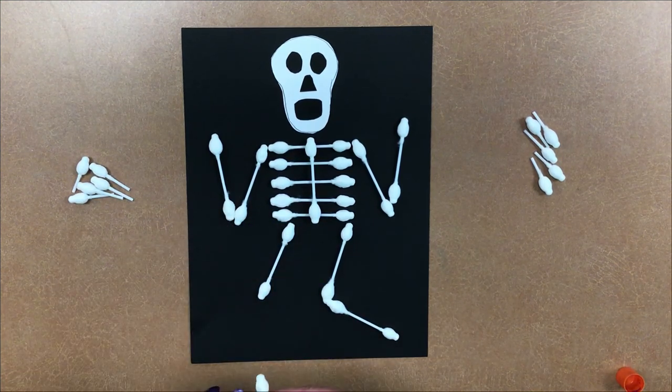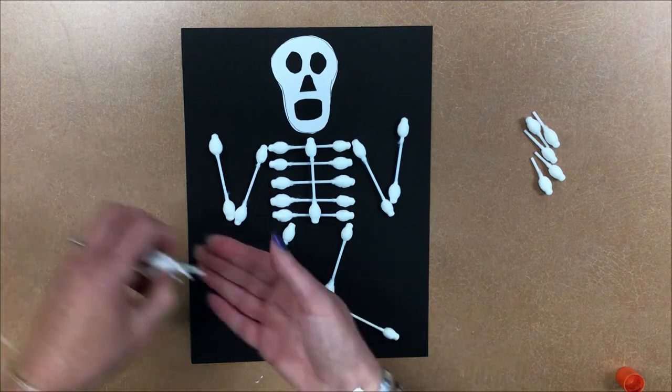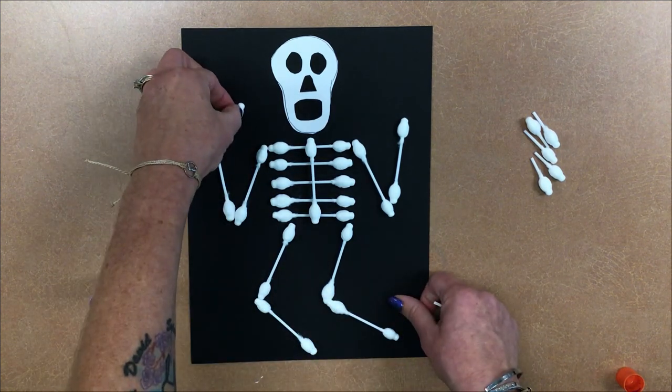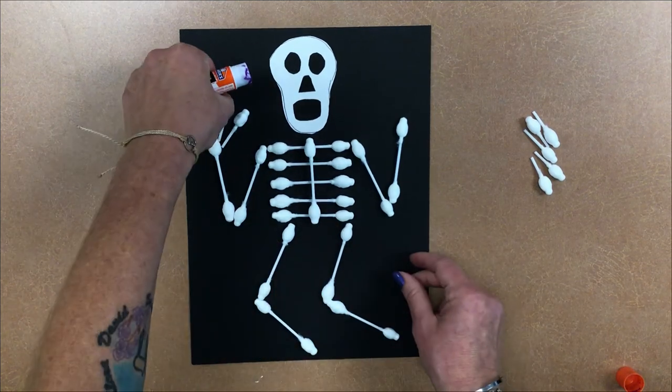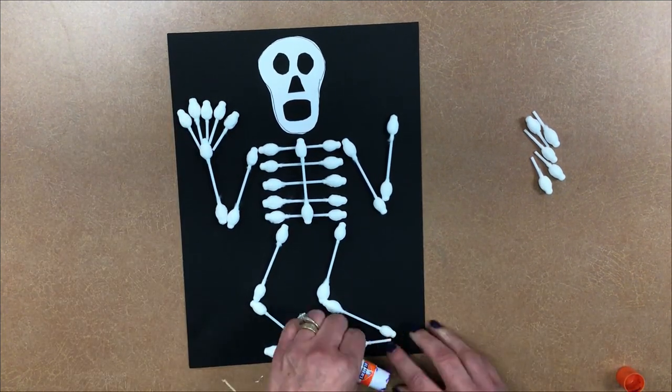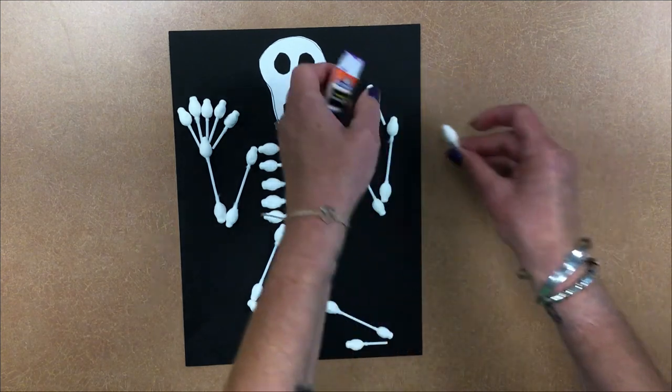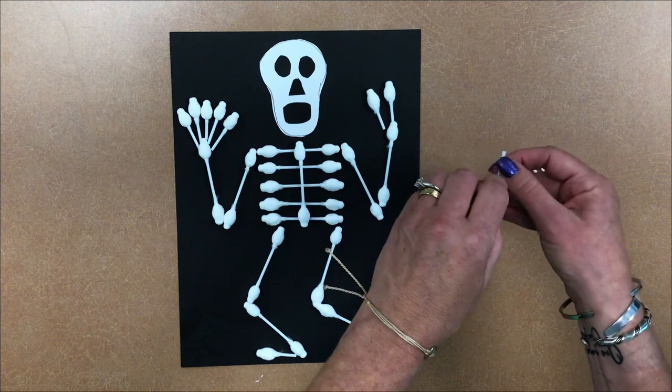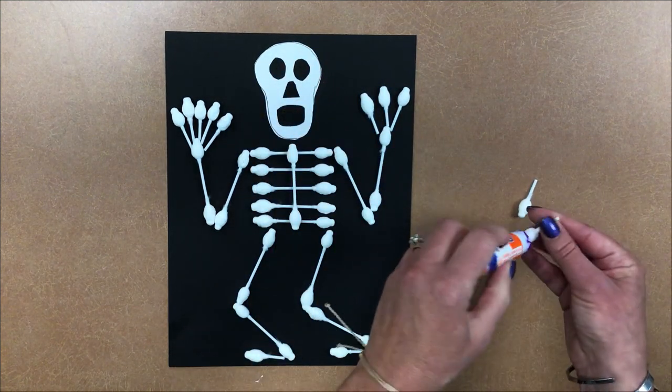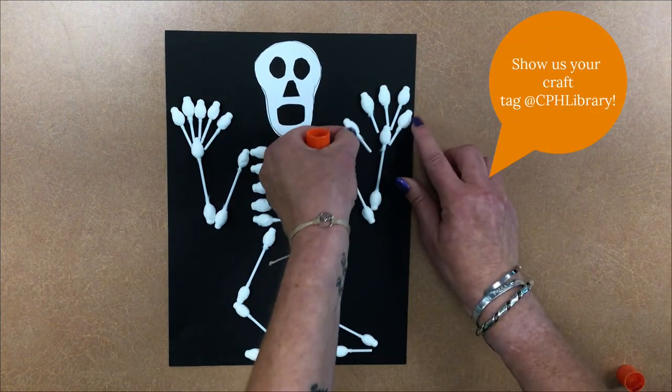So now that we're done with our 14 uncut Q-tips, we're going to have someone help us cut six Q-tips in half. So we have 12. And we're going to do five fingers on one hand. You guys could practice your counting with this, too. One. Two. Three. Whoops. Keep pressing them down. That looks like a pinky. Four. And five.